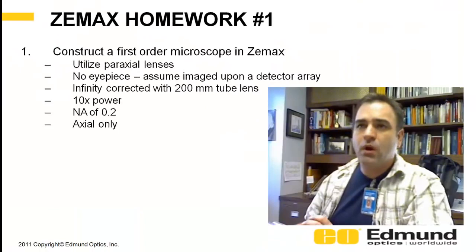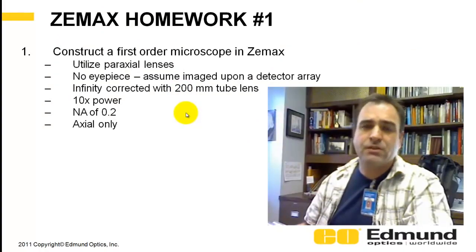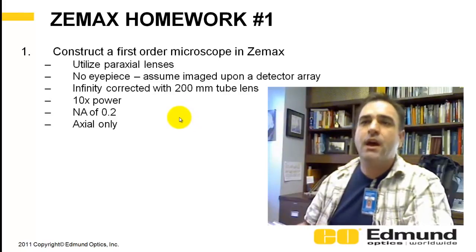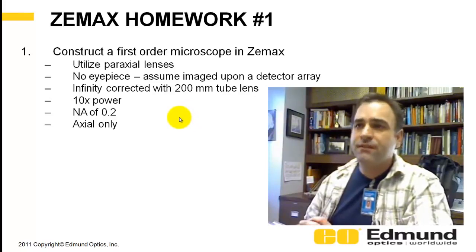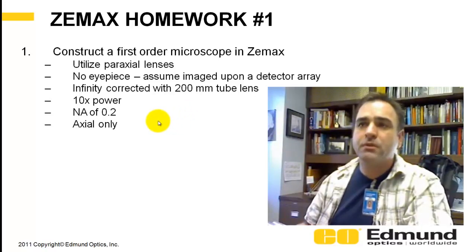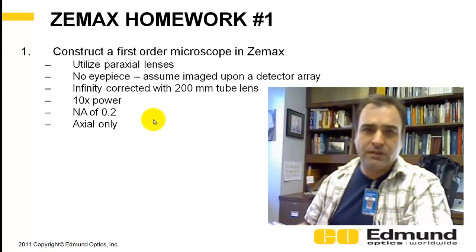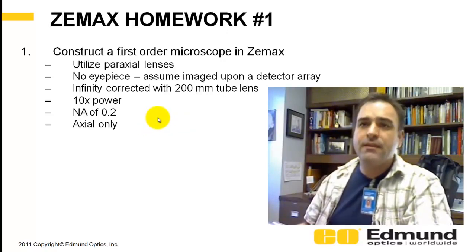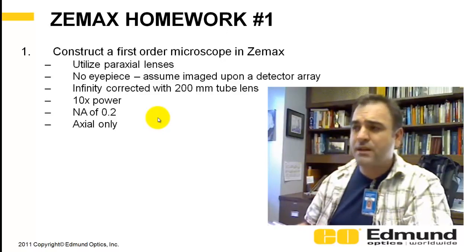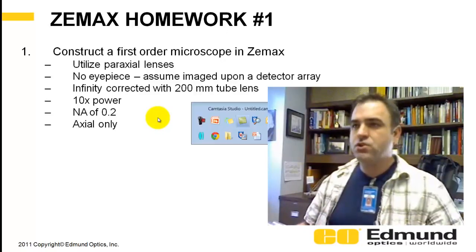So the homework is to construct a first-order microscope in ZEMAX using paraxial lenses, no eyepieces, just infinity corrected with a 200 millimeter tube. You're going to have a tube lens — a paraxial lens as a tube lens — and then design an objective, again a paraxial lens. Let's jump over to ZEMAX.